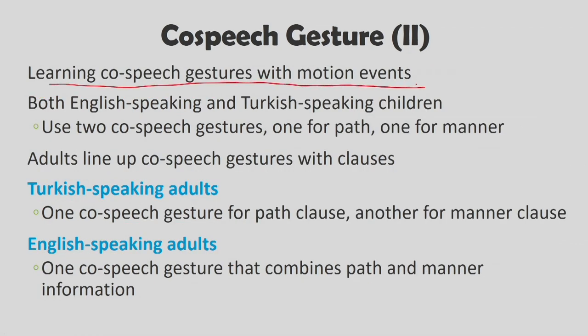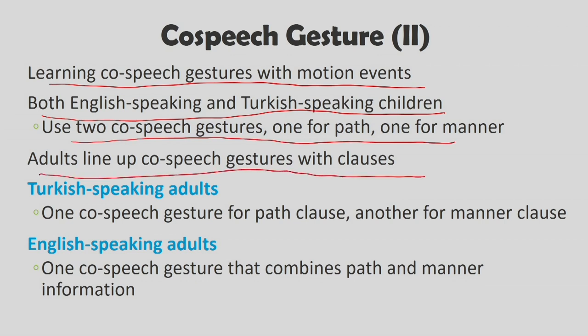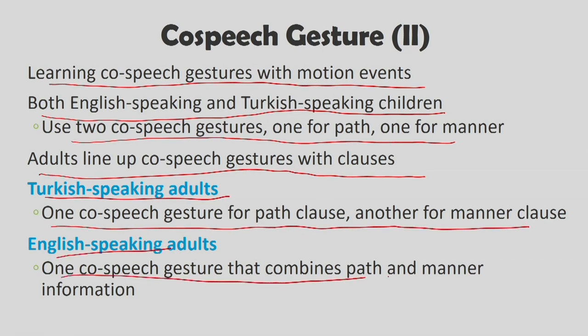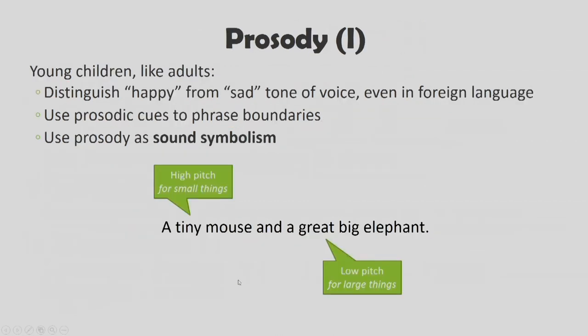We also use co-speech gestures — hand movements that speakers make when they talk, tending to be lined up at the clause level. An English speaker would likely depict 'Jack and Jill tumbled' with a single rolling gesture in a downward motion, whereas a Turkish speaker would use two separate gestures — one accompanying the downward path and another accompanying the manner of rolling. Both English-speaking and Turkish children use two co-speech gestures — one for path and one for manner — while adults in each language line them up with their clauses accordingly. Prosody — the fluctuations in pitch we have learned about before — is also important: young children, like adults, distinguish happy from sad tone of voice even in foreign languages. Prosody thus provides emotional and syntactic information from a sentence.